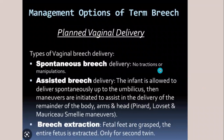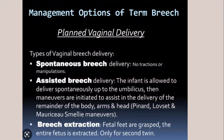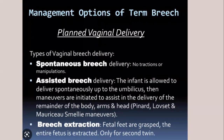Types of vaginal breech delivery include: spontaneous breech — also called physiological breech — which is a no-touch technique with no traction or manipulation; the infant is allowed to deliver spontaneously up to the umbilicus, then maneuvers may assist delivery of the arms and head. You can opt for the Pinard maneuver, Løvset, and Mauriceau-Smellie-Veit maneuvers to deliver the aftercoming head if need arises. Breech extraction, where fetal feet are grasped and the entire fetus is extracted, is practiced only for the second twin.